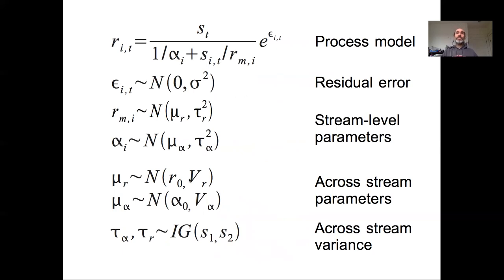This gives us this overall model. We have our process model between recruits and spawners. We have a data model where we're assuming log normal error with zero bias and some sigma squared.